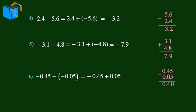Now to determine the sign, we see that negative 0.45 has the greater absolute value, so our answer will be negative. And we don't need the extra 0 in the hundreds place, so the final answer is negative 0.4.